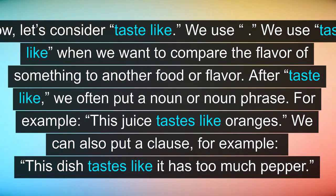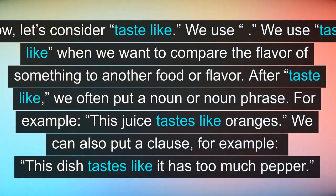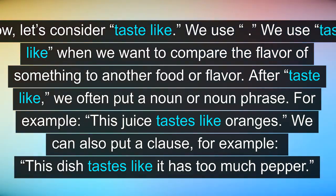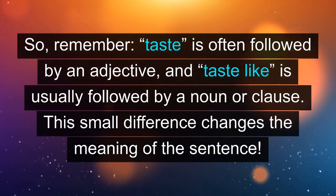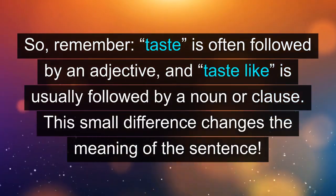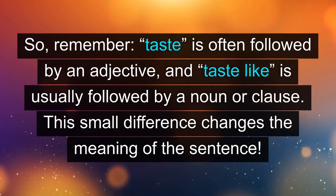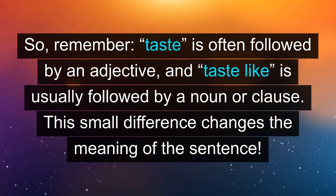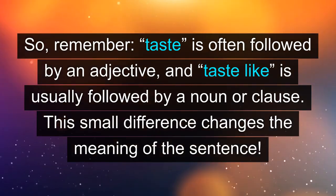Now, let's consider taste like. We use taste like when we want to compare the flavor of something to another food or flavor. After taste like, we often put a noun or noun phrase. For example, this juice tastes like oranges. We can also put a clause — for example, this dish tastes like it has too much pepper. So, remember: taste is often followed by an adjective, and taste like is usually followed by a noun or clause. This small difference changes the meaning of the sentence.